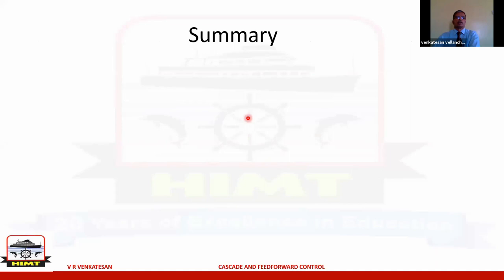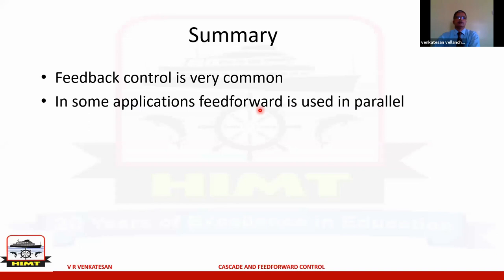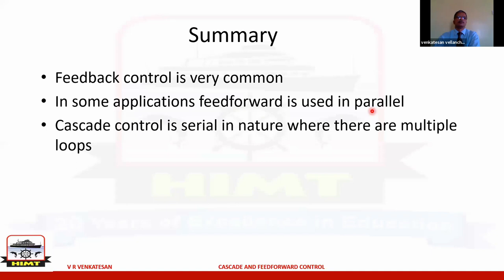To summarize: feedback control is very common and always error-based — deviation takes place and then correction occurs. Feed forward is not based on error; it is based on disturbances, which can be a load factor or changes on the input side of a process. In some applications they can be used in parallel. Cascade control is serial in nature with multiple loops.